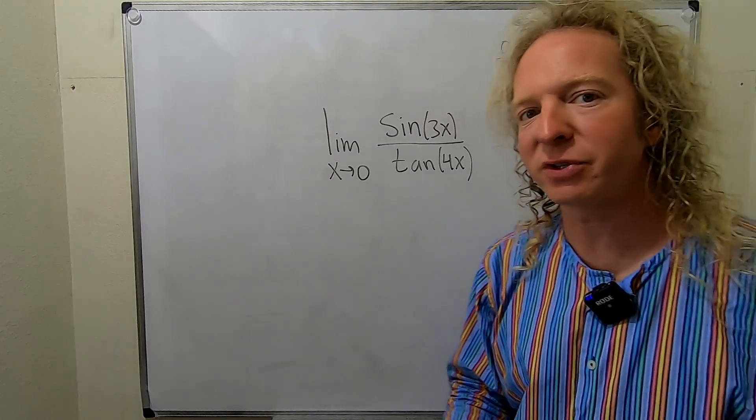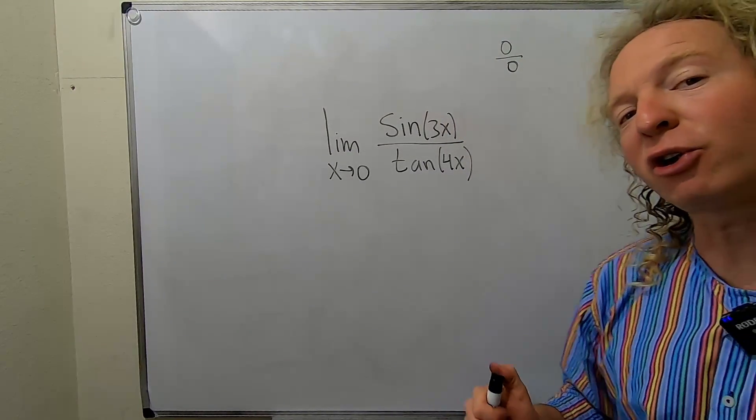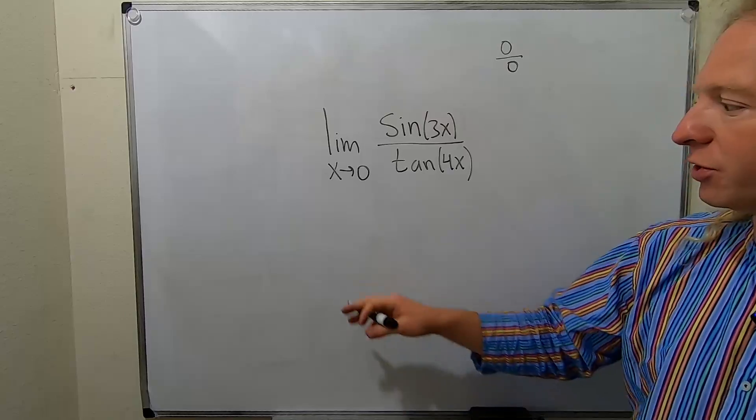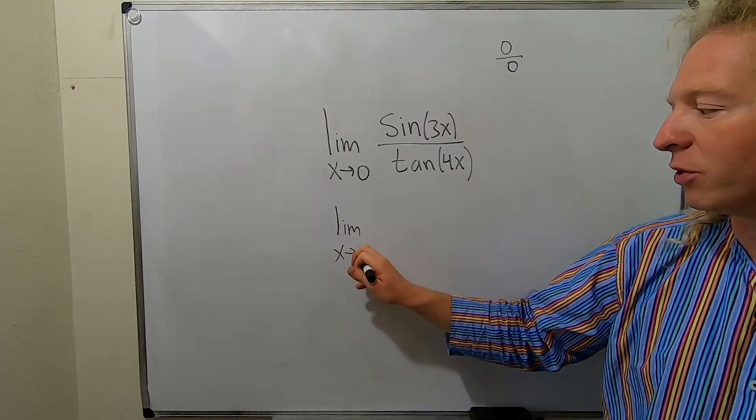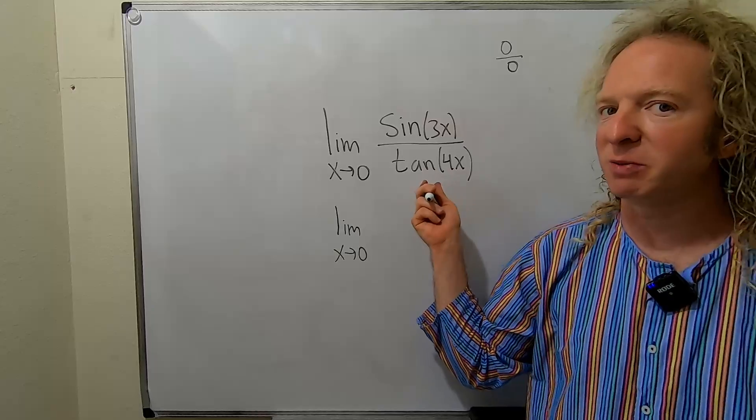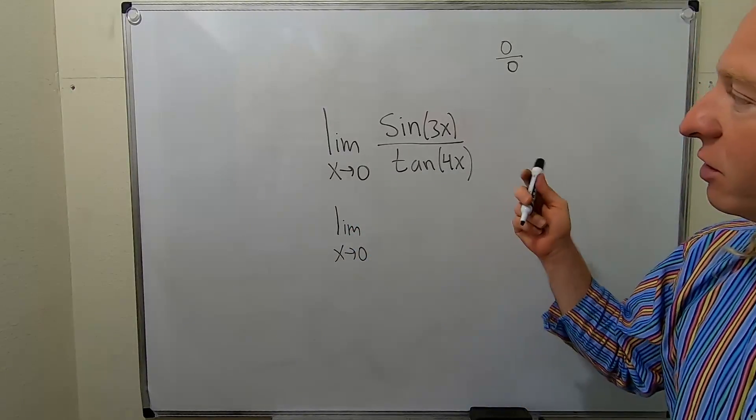Whenever you have 0 over 0, or infinity over infinity, you can use something called L'Hopital's Rule. L'Hopital's Rule says that you continue to take the limit, and what you do is you just take the derivative of each piece. It's super powerful. So let's do that.